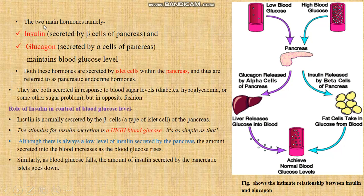There are two main hormones responsible for maintaining blood glucose level: insulin, which is secreted by beta cells of the pancreas, and glucagon, which is secreted by alpha cells of the pancreas. These two hormones maintain blood glucose level. Both are secreted by islet cells within the pancreas and are referred to as pancreatic endocrine hormones. They are secreted in response to blood sugar levels — hyperglycemia (high sugar) or hypoglycemia (low sugar) — but in opposite fashion.